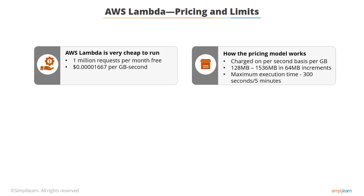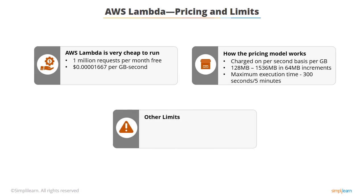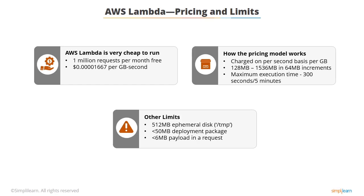As with all AWS services, there are certain limits you should be aware of. You can only have up to 512 megabytes of ephemeral disk storage, located in /tmp — this is not a variable you can change. A deployment package or zip file cannot be larger than 50 megabytes. A request payload cannot exceed 6 megabytes, and you can only have 100 concurrent requests at a time.